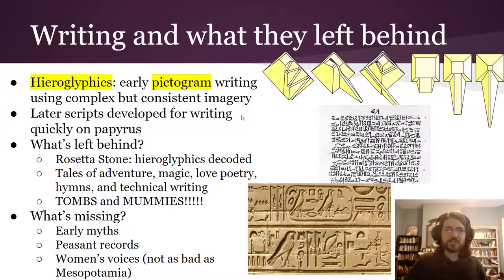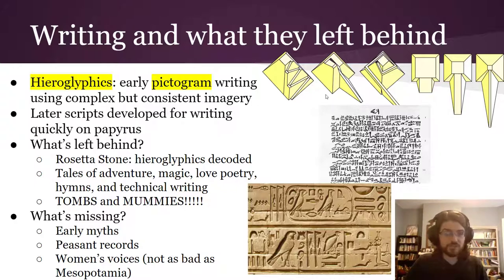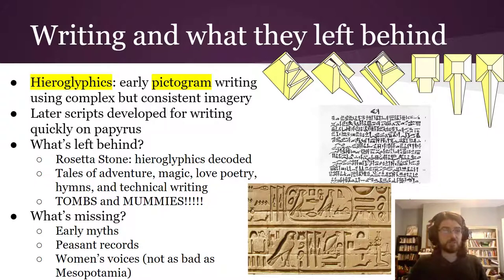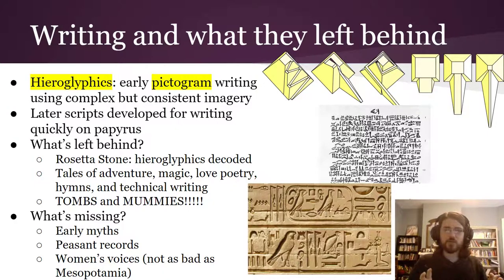What's missing is we don't have clear answers to some things people would really like to know — like exactly how they got those massive stones up onto the pyramids. We have suggestions, such as different kinds of ramps built from packed earth, but not final definitive answers. We also don't have a great record of their early myths the way we do for Mesopotamia, and we're missing the records of what the average person thought because peasants could not write. We have mostly elite men's voices, but we do have more women's voices in Egypt than in Mesopotamia, where some women had more power.